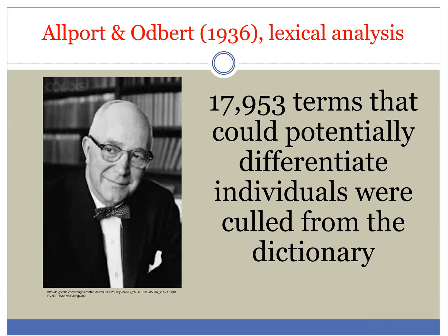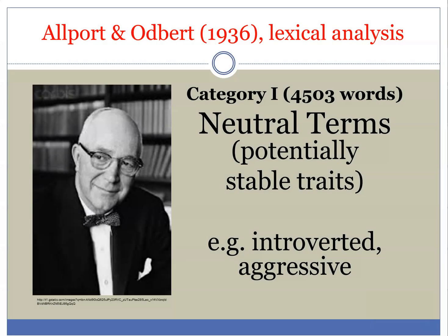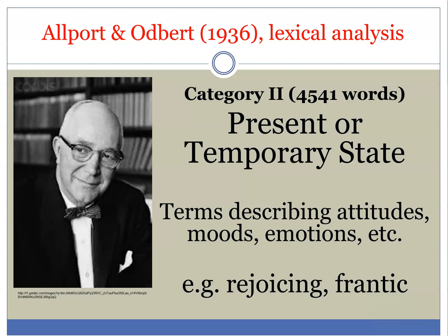They then did a subsequent analysis of those words and divided them into four categories. Category one were neutral terms representing possibly stable personality traits — words like introverted, aggressive, conscientious, impulsive. Category two represented present or temporary states, describing things like mood and emotion — words like rejoicing or frantic. The problem with temporary or state terms is that sometimes they can also represent either a state or a trait.